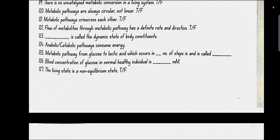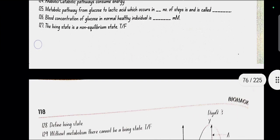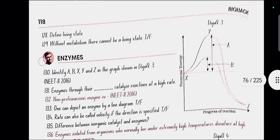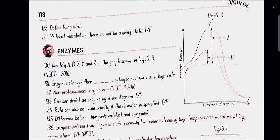Metabolic pathway from glucose to lactic acid which occurs in 10 number of steps is called glycolysis. The blood concentration of glucose in normal healthy individual is 4.2 to 6.1 mM. The living state is a non-equilibrium state. Yes, true. Living state is a non-equilibrium steady state to be able to perform work. Without metabolism, there cannot be a living state.